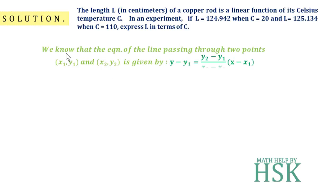We know that the equation of a line passing through two points (x₁, y₁) and (x₂, y₂) is given by: y minus y₁ equals (y₂ minus y₁) over (x₂ minus x₁) times (x minus x₁).